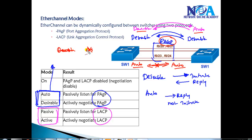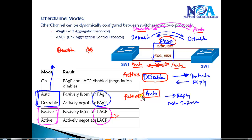For LACP, 'active' is equivalent to PAgP's 'desirable' — it initiates as well as replies. 'Passive' is equivalent to PAgP's 'auto'. So for LACP, you can use active-active on both sides, or active-passive on one side. However, passive-passive will not work because neither side initiates — same logic as auto-auto in PAgP.